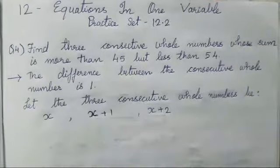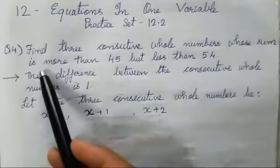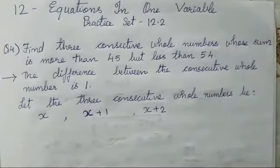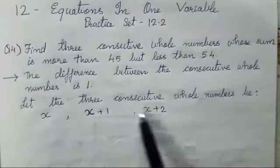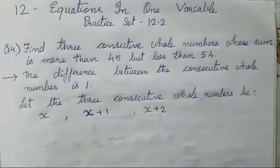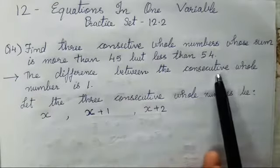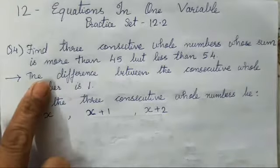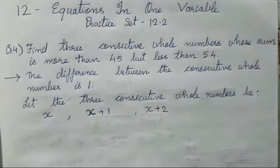Let's start with the fourth question. Find three consecutive whole numbers whose sum is more than 45 but less than 54. So there are 3 consecutive numbers: x, x plus 1, x plus 2. These are the 3 consecutive whole numbers. The difference between the consecutive whole numbers is 1.